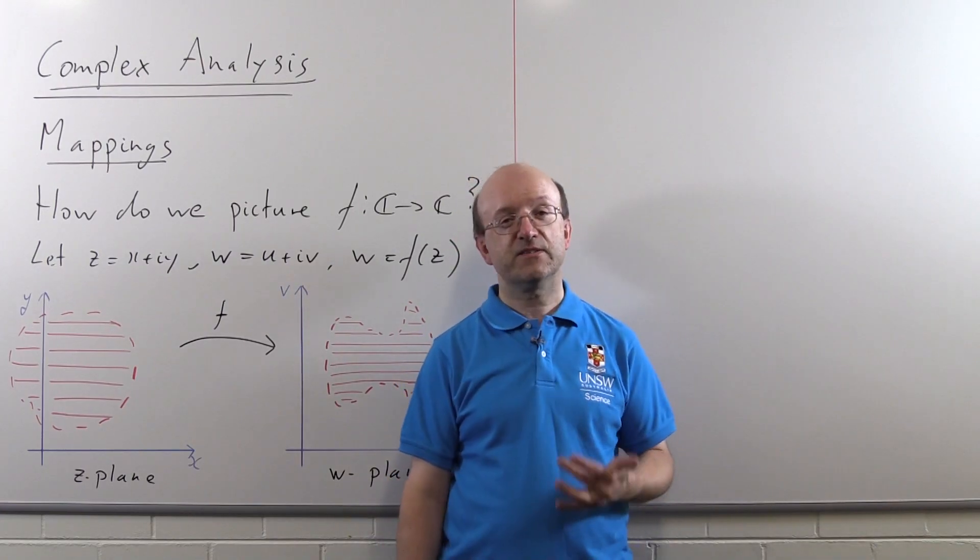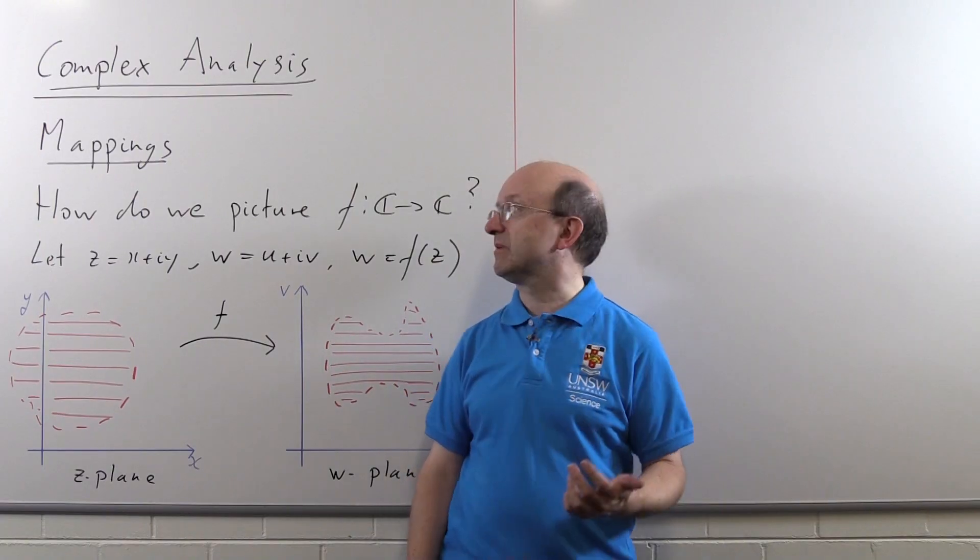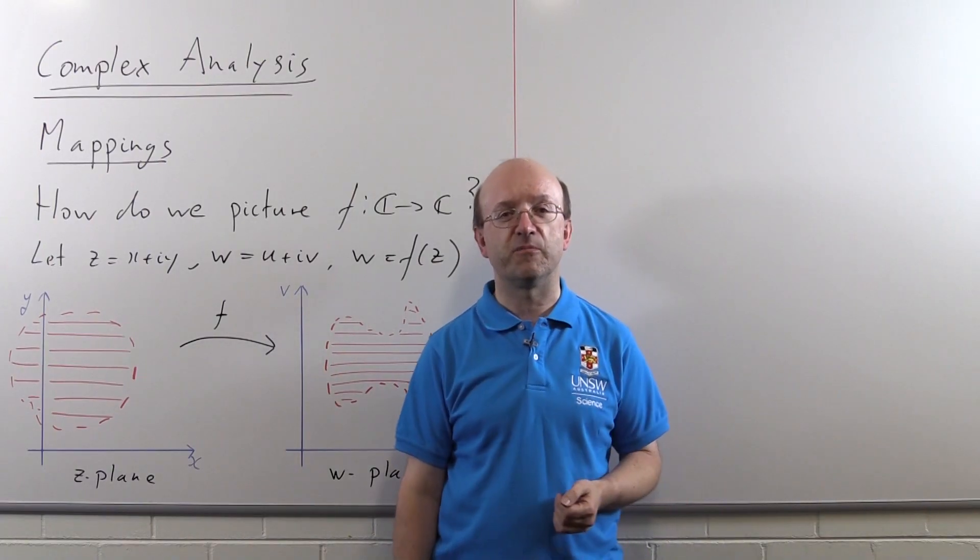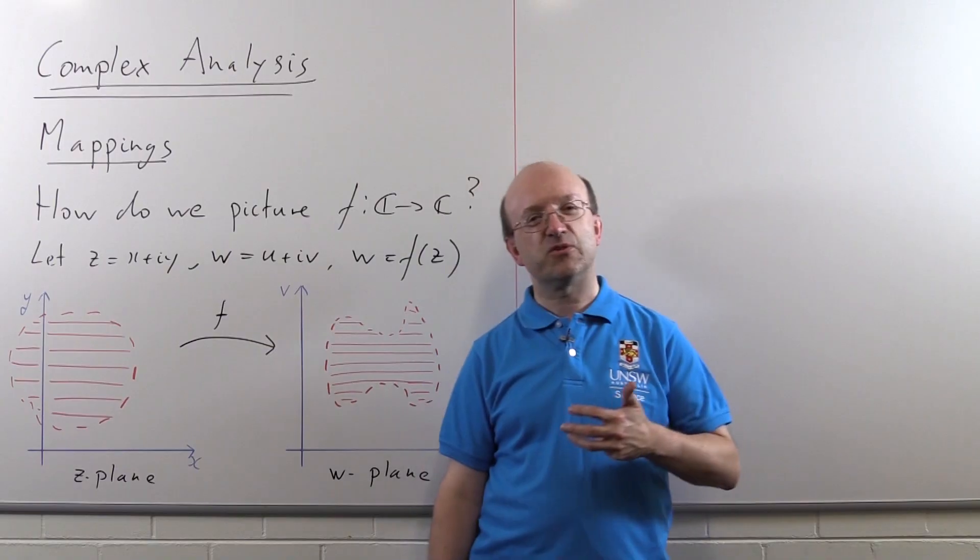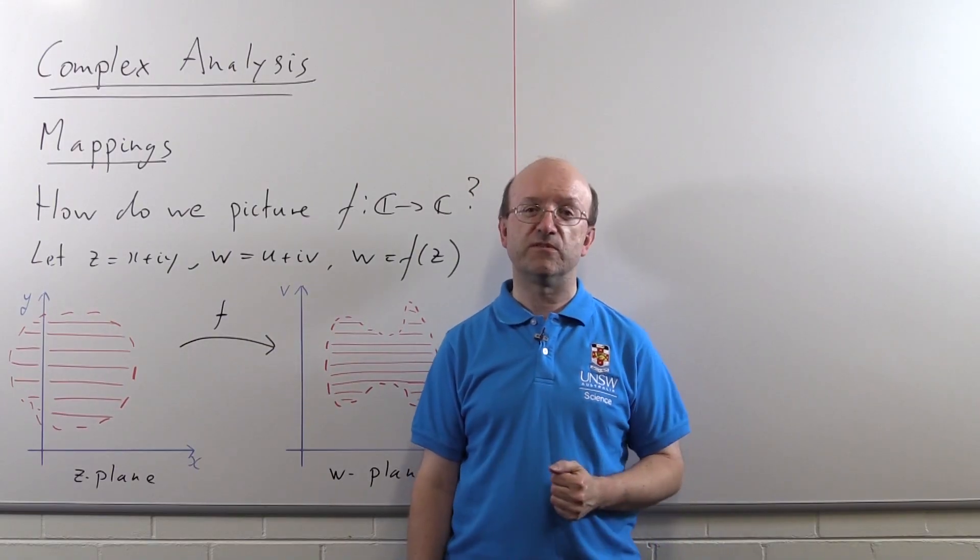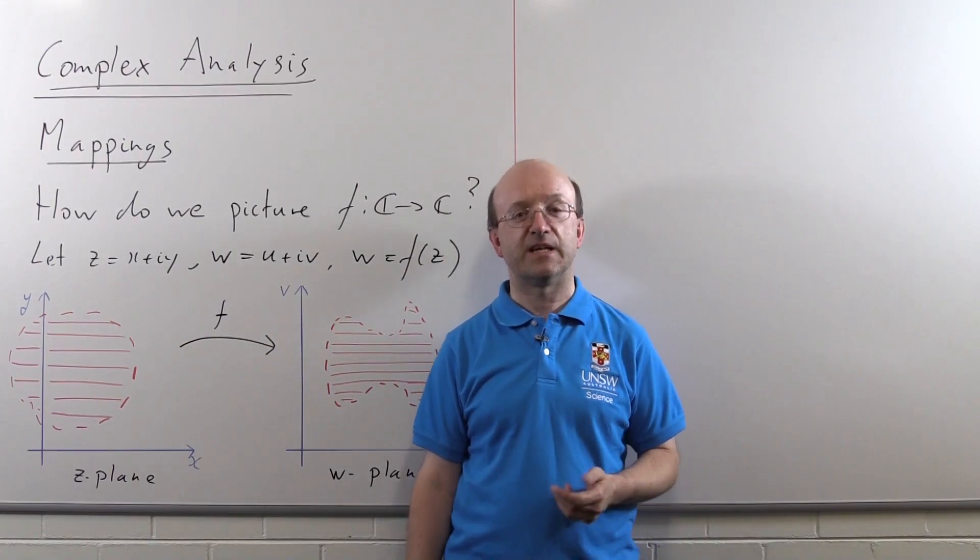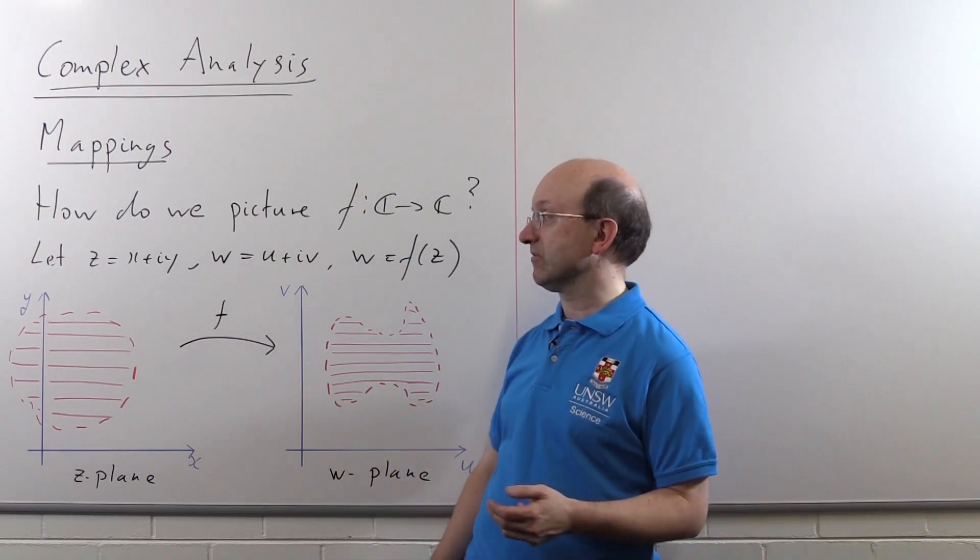What I want to look at in this video is mappings. How do we picture a function of a complex variable? Well, we can't draw a graph like we would do for a function of a real variable because we don't have enough dimensions. We need four dimensions and we've only got three.